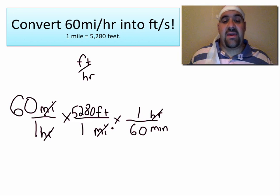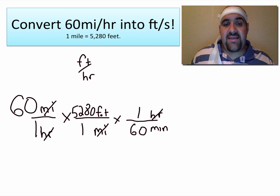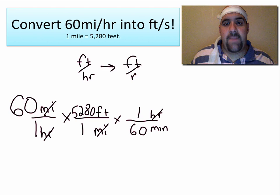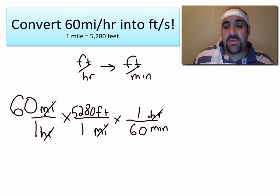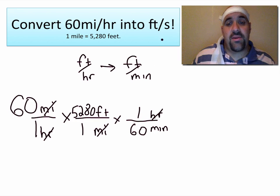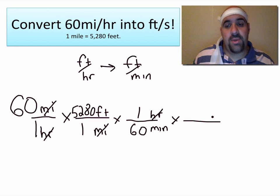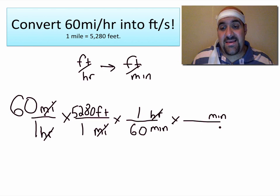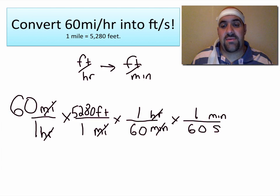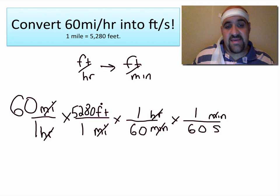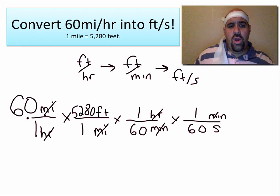If we multiplied across and divided by the denominator now, we would get a unit in feet per minute. But I wanted seconds, so I need to get rid of the minute in the denominator. I put minute on top in the next fraction, because units cancel in division, and seconds goes on the bottom. One minute is 60 seconds — these minutes cancel, and the only unit left is feet over seconds: feet per second.